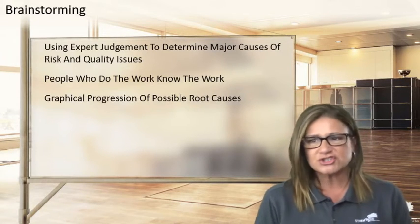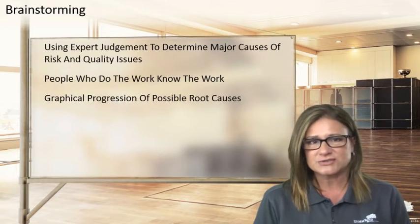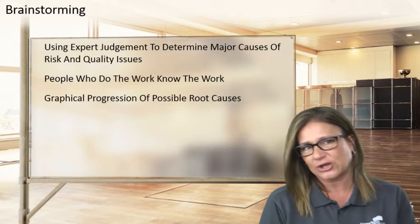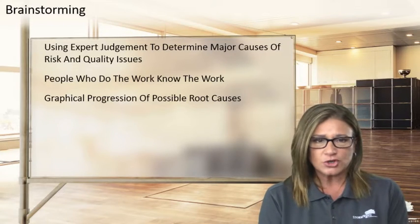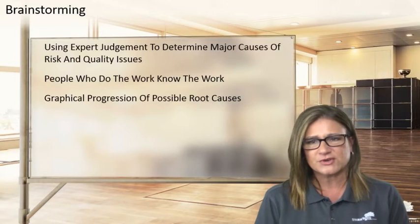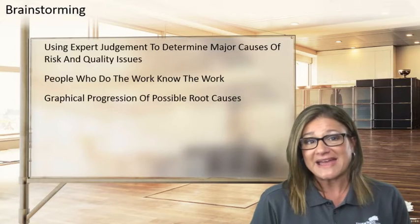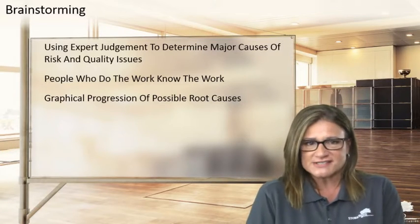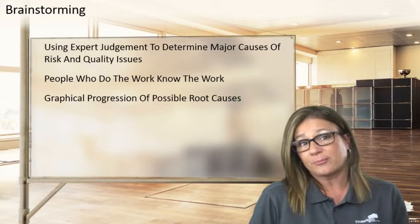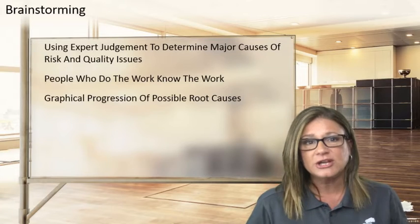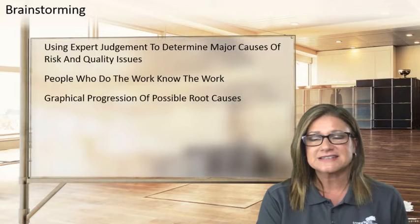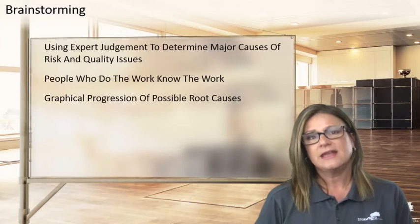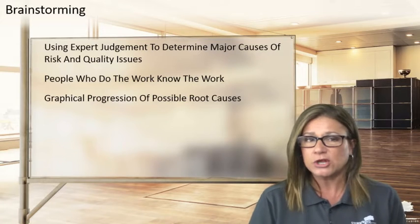To identify root causes of risk and quality problems, you'll need to work with your experts and your team to determine major causes. Sometimes those are industry-specific — like technical, mechanical, or machinery-related. The people who do the work know the work, so they're the best people to reach out to for brainstorming — to figure out not just the categories but the potential root causes, and work through the progression of a breakdown like an Ishikawa diagram so you can graphically represent possible root causes and apply the best response to the actual root cause.